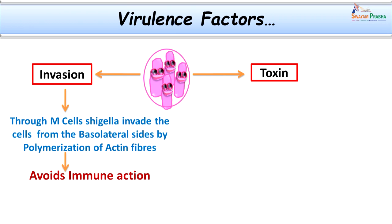Now coming to virulence factors — what makes Shigella so pathogenic? It is said to have a double-edged sword: it has the capacity to invade and also to secrete a very potent toxin called Shiga toxin. Shigella acts on M cells, invades them by macropinocytosis, and starts spreading to neighboring cells via the basolateral sides of epithelial cells. It then polymerizes actin fibers so that actin filaments help transfer organisms to neighboring cells.